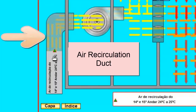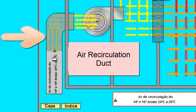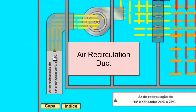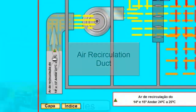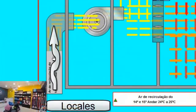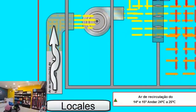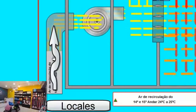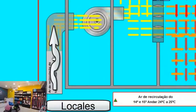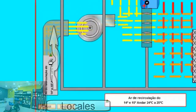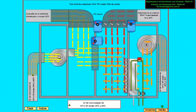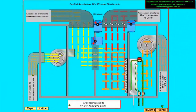The recirculation duct is responsible for bringing back a flow of air from the premises to the air handling unit. The value of the amount of air that recirculates has to do with factors such as the concentration in ppm of CO2 inside the premises.